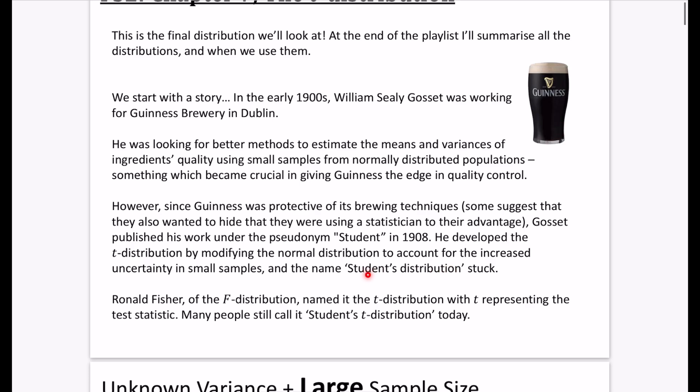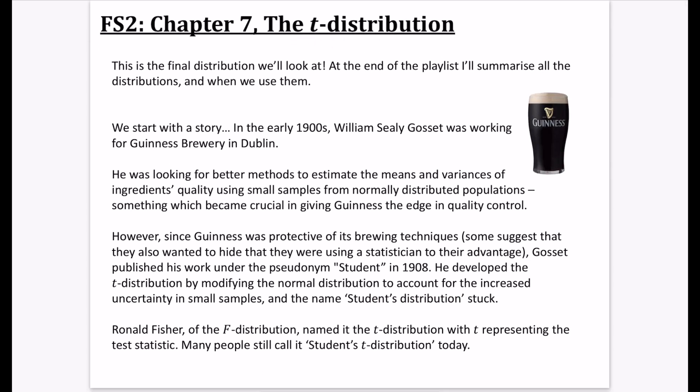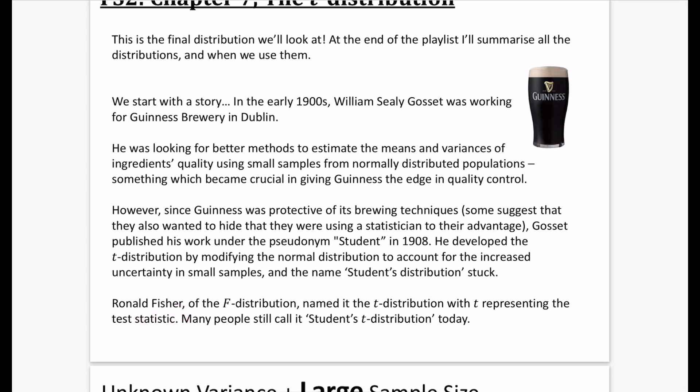Why does it loop back around and become the T distribution or the student's T distribution? Ronald Fisher of the F distribution, F for Fisher, named it the T distribution because T was representing the test statistic. Many people still call this the student's T distribution today. In fact, in the formula booklet, the T distribution table is called the student's T distribution table, not referring to you as the student, but referring to William Gossett as the original person who looked at this idea back in 1908, trying to make the production of stout even better. That's just a really fascinating story about how a company in the 1900s was using statistics to get the edge on their competitors.